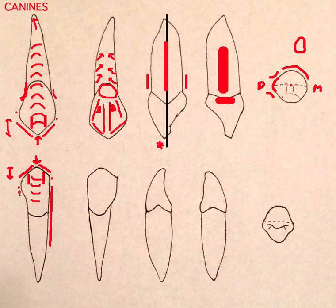On the distal side, there is a large concavity at the cervical third of the tooth. Moving to the lingual aspect, it's similar to the maxillary canine except everything is smaller.